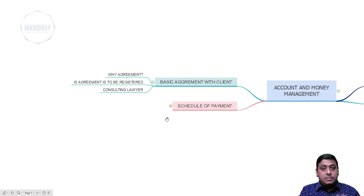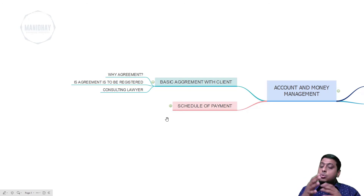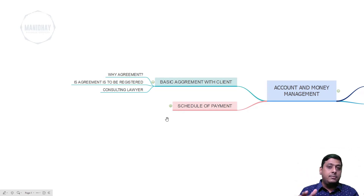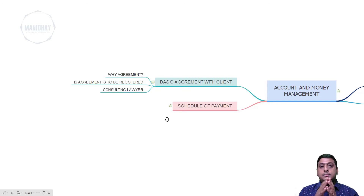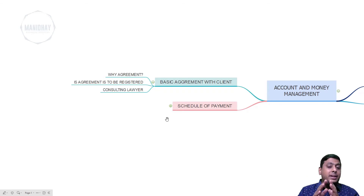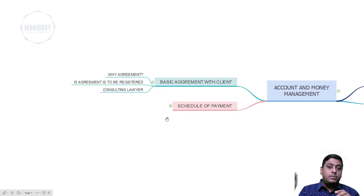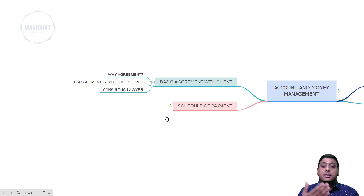Similarly, if you quoted a basic tile at 65 rupees and the client selects an 80-rupee tile, the 15-rupee difference has to be paid by the client. The schedule of payment will also be mentioned in the agreement. The agreement can be registered depending on your trust with the client, and for certain project amounts a bond may be required. Consult your lawyer for the proper agreement format.